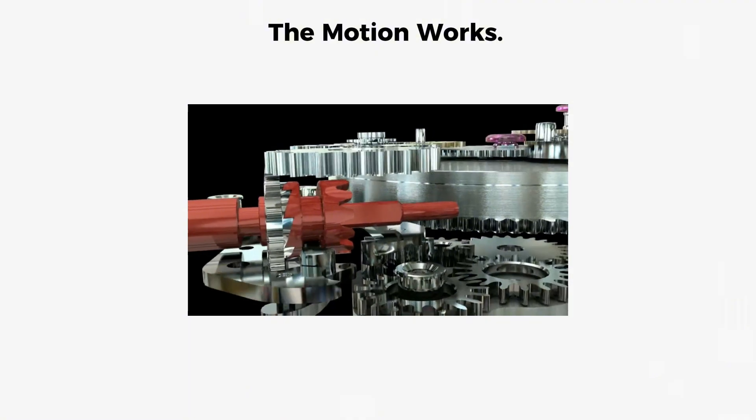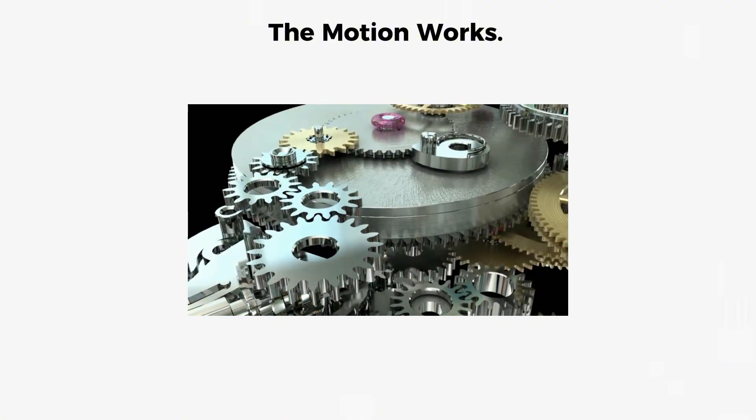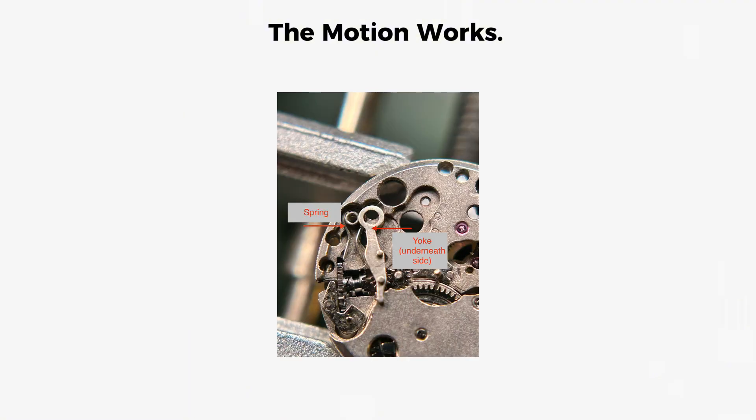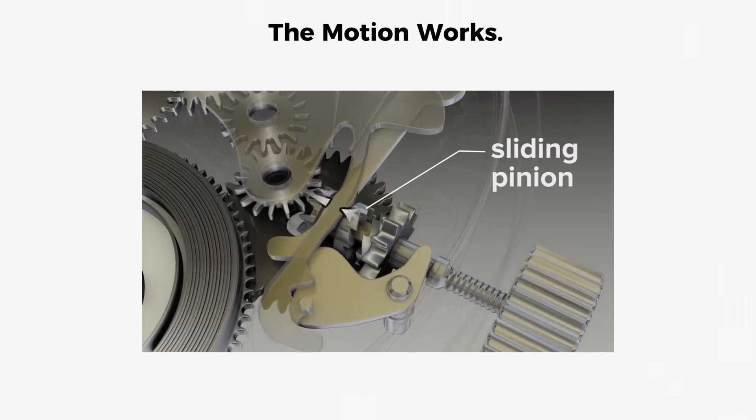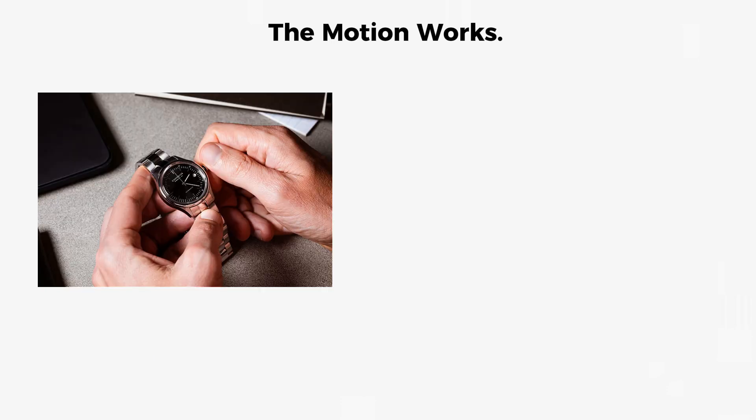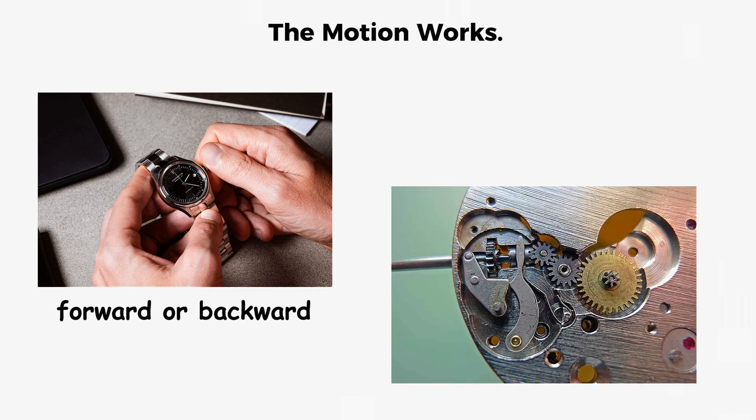When you pull the crown out to set the time, a mechanism called the keyless works engages. The setting lever clicks into an indent on the setting jumper, which then presses against a spring-loaded yoke. The yoke moves a sliding pinion into connection with the time-setting gears, allowing you to rotate the hands forward or backward without stopping the watch or damaging the gear train.